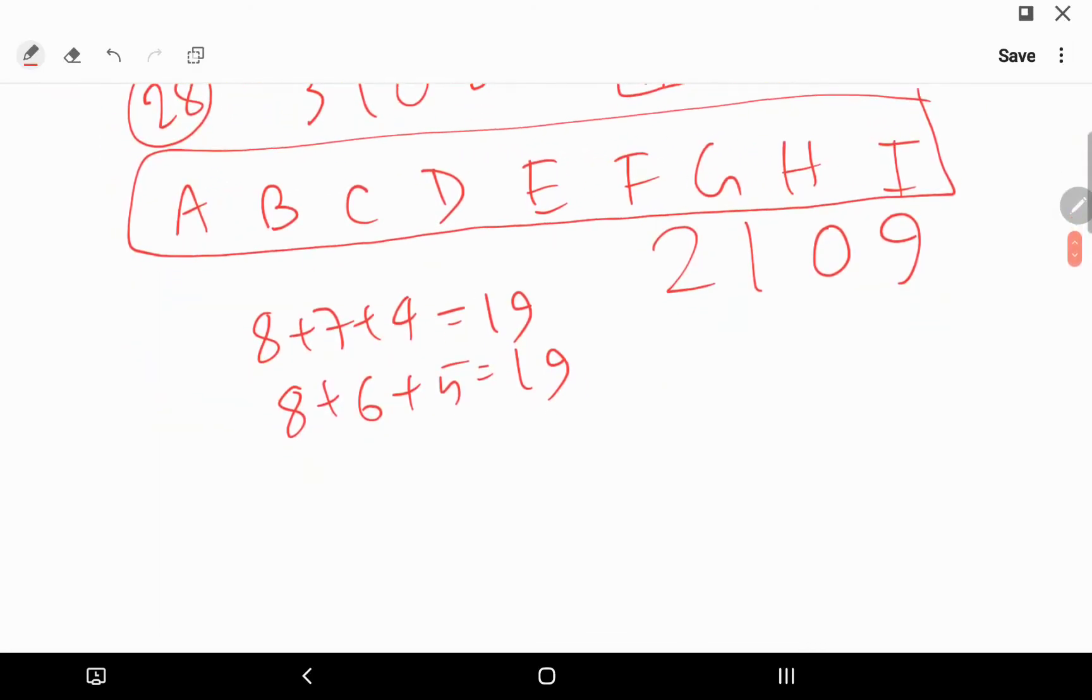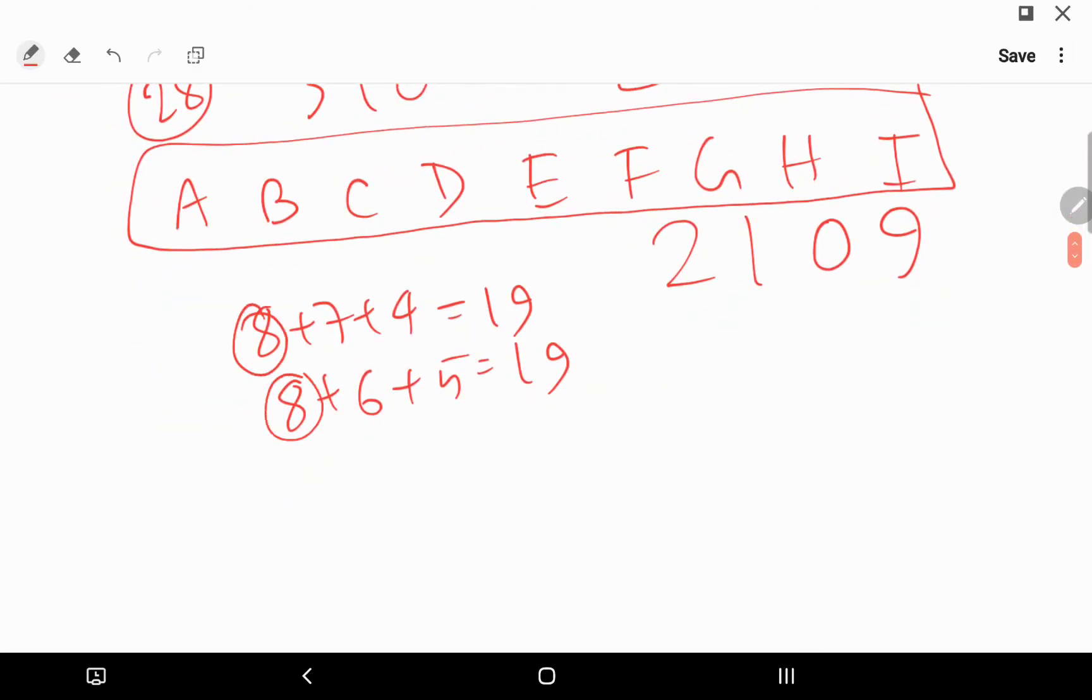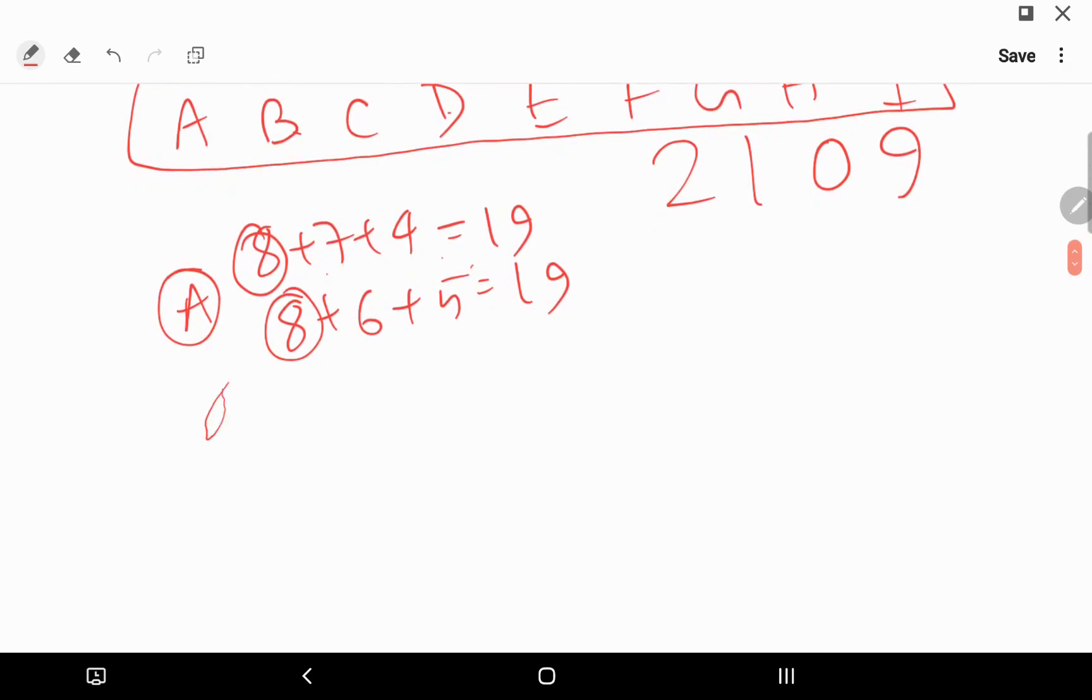So 8 is common. Obviously 8 must be A. Now B and C and D and E can be anything: 7, 4... I mean the case is this.